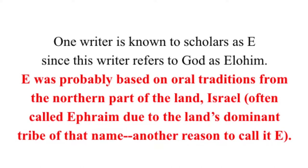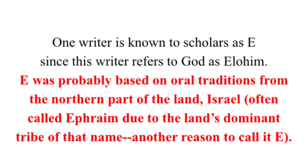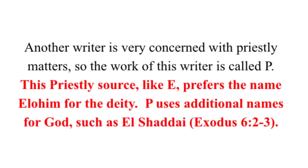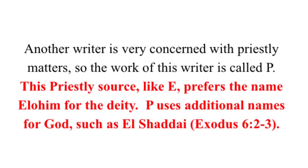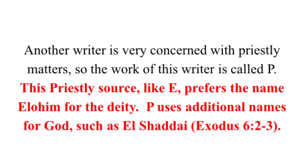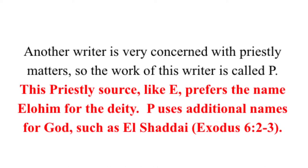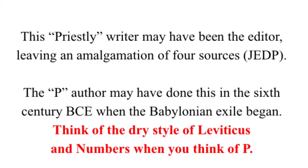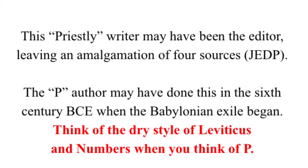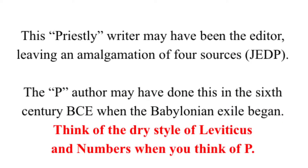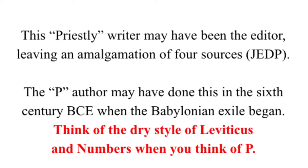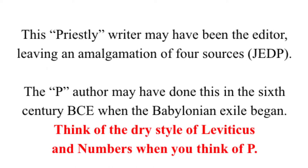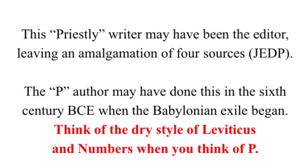One writer is known to scholars as E, since this writer refers to God as Elohim. Another writer is very concerned with priestly matters, so the work of this writer is called P. This priestly writer may have been the editor, leaving an amalgamation of four sources. The P author may have done this in the 6th century BC, before the Common Era, when the Babylonian exile began.